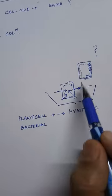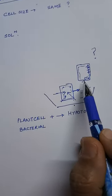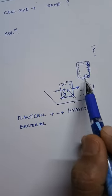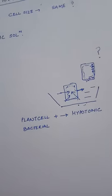Cell size would remain the same and cells would resist bursting in hypotonic medium.